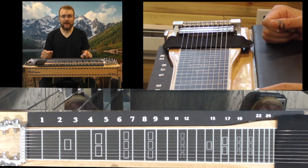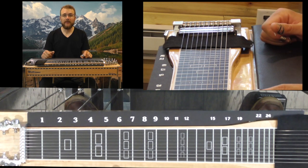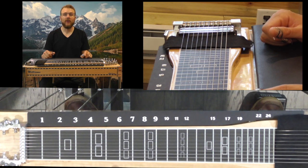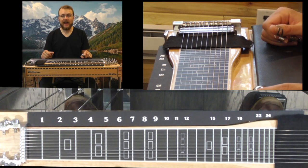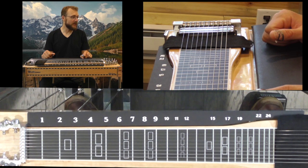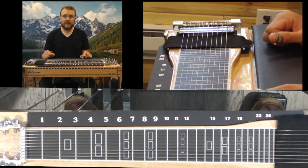The progression is a 1-5-1-1, so a measure of A flat, a measure of E flat, and then two measures of A flat again, essentially.